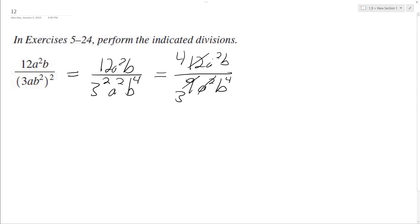So the a squareds cancel out, and the b to the fourth on the bottom cancels out and just becomes cubed. So we get 4 over 3b cubed.